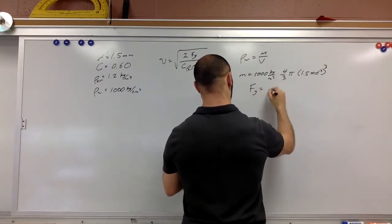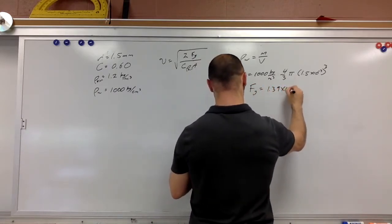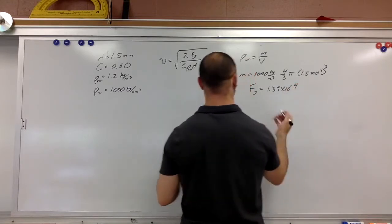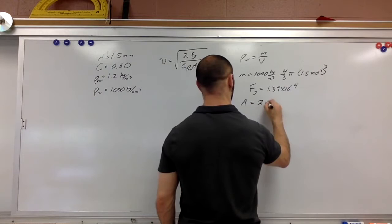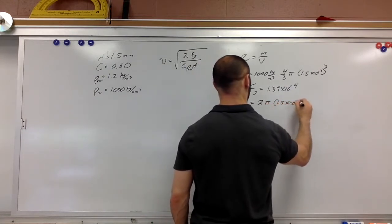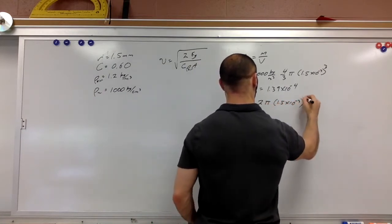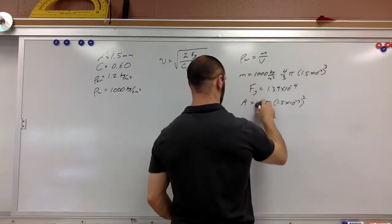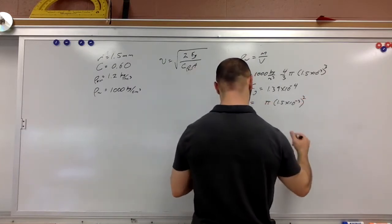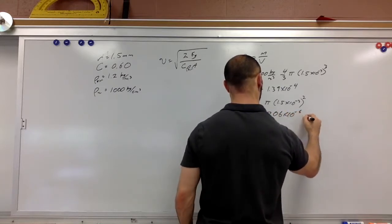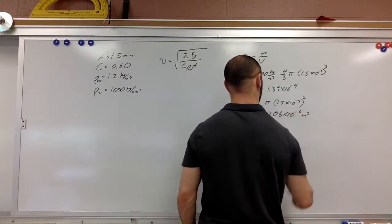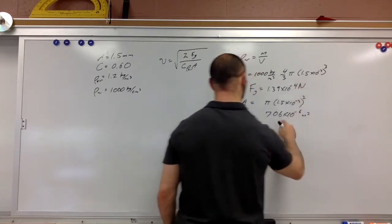Okay so then this tells me that the force of gravity, multiply this by 10, I'm going to get 1.39 times 10 to the negative fourth. I also need to know the cross-sectional area so area is pi r squared and R is 1.5 times 10 to the negative third, and so this is 7.06 times 10 to the negative sixth square meters. This is in newtons.